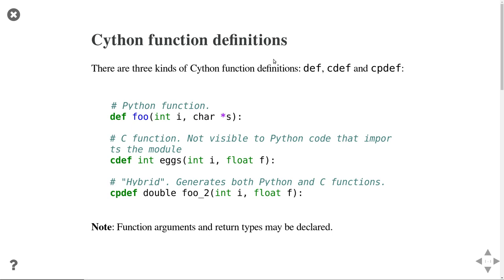There is also 'cdef'. If you use cdef, then the function definition will only be visible from the C layer and will not be exported to the Python layer. So if you have a Cython program with an internal function that is only used for computations within that Cython program and does not need to be exported to the compiled Python module, then you can use cdef — it's only internal.